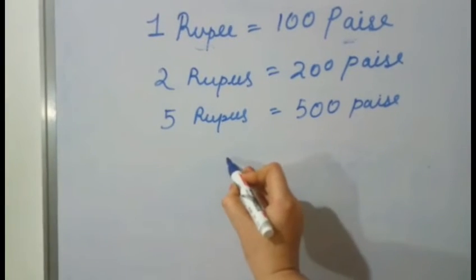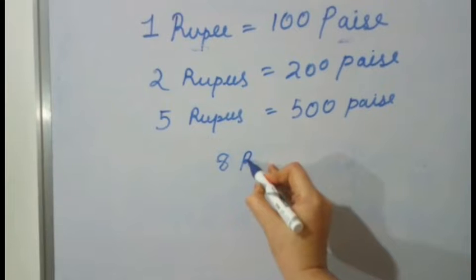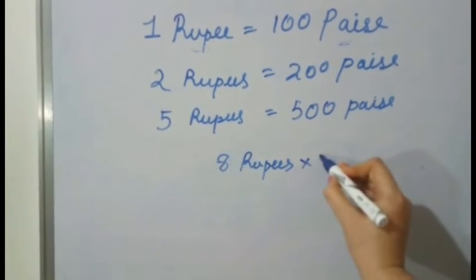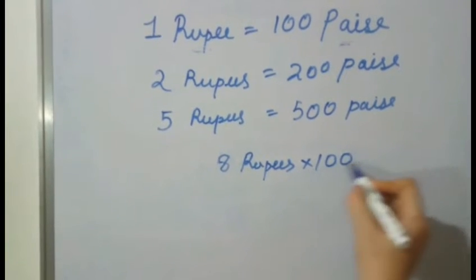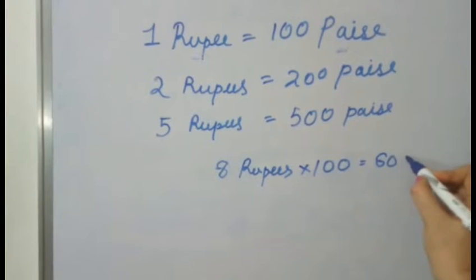Suppose, 8 rupees. We have to convert into paise. We have to simply multiply with 100. And we will get 800 paise.